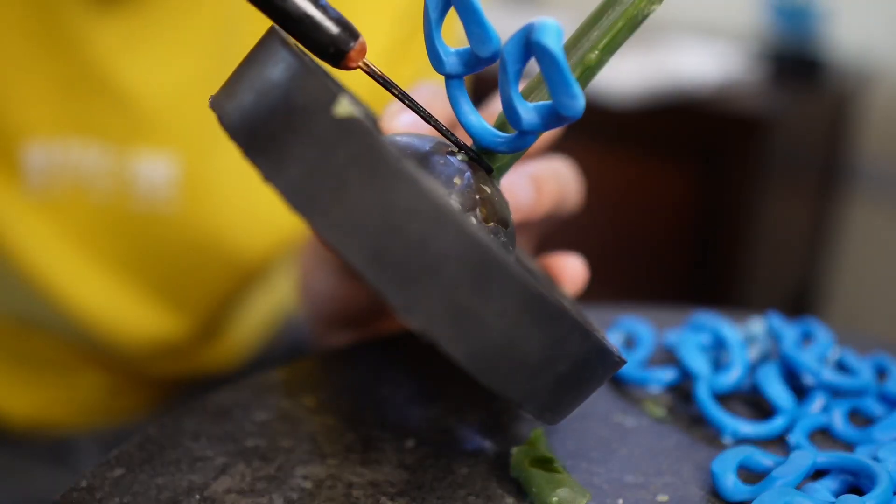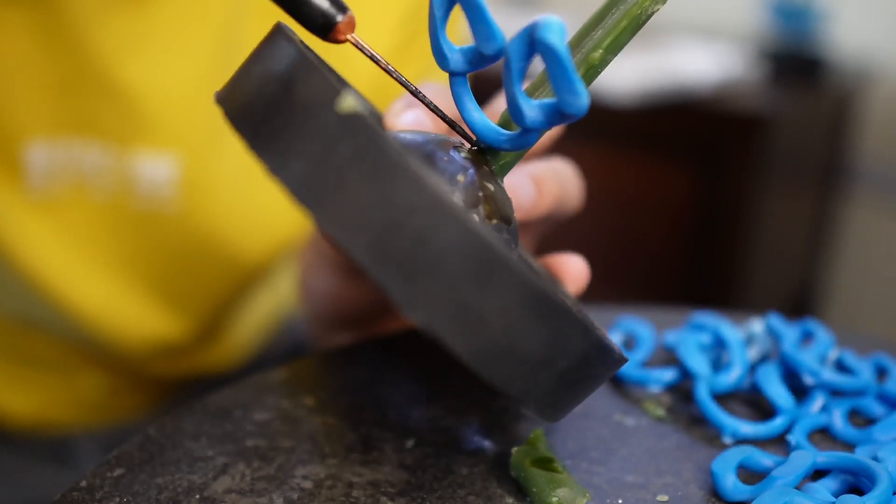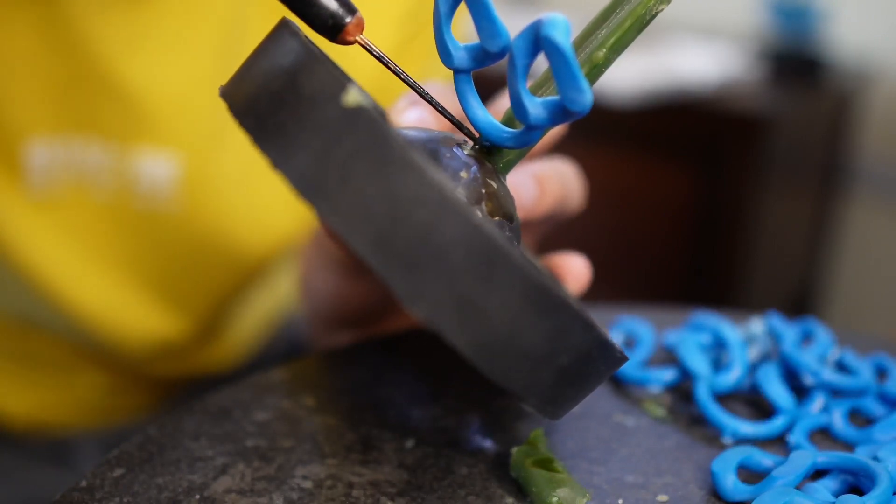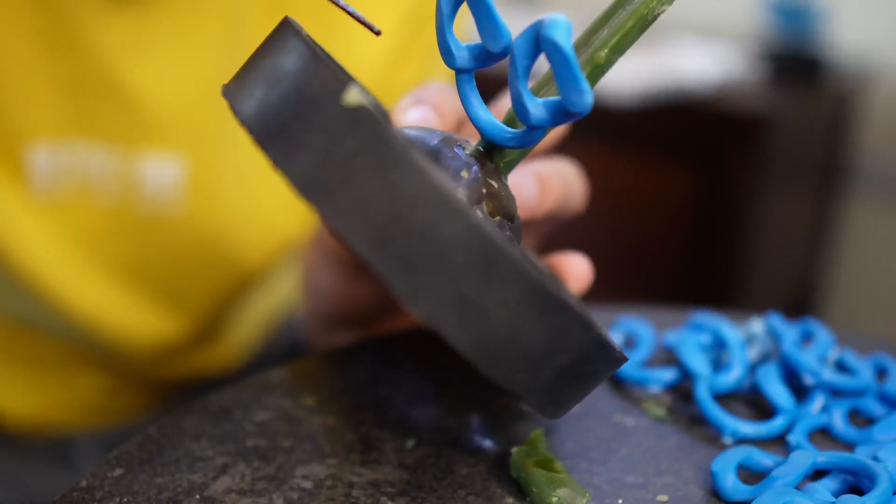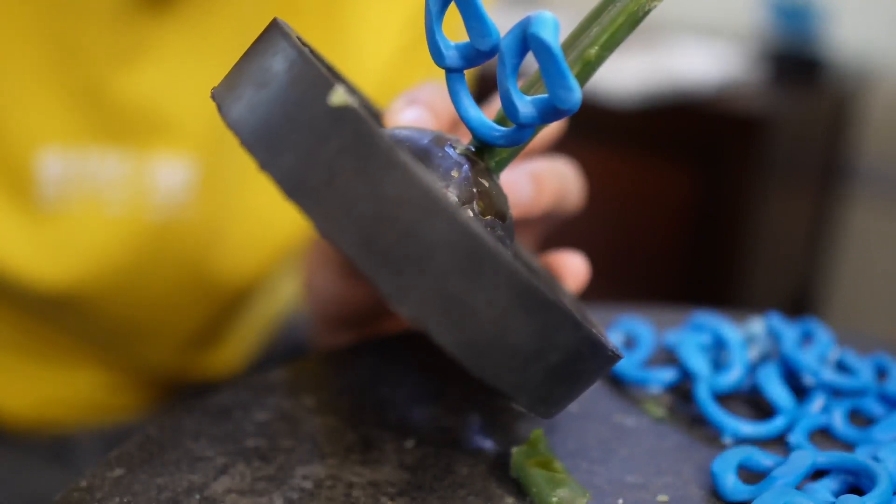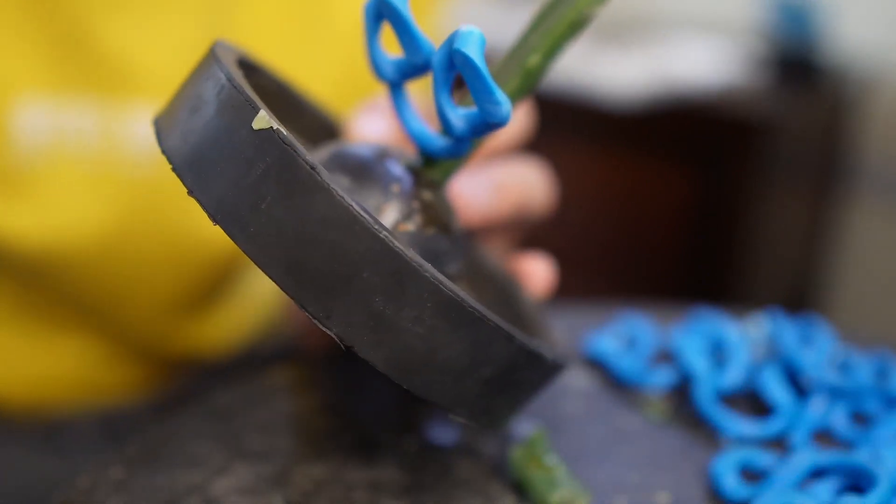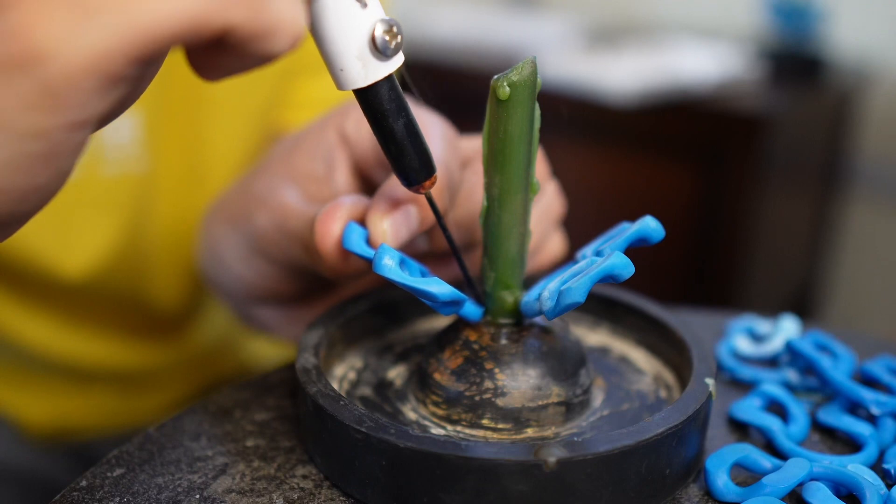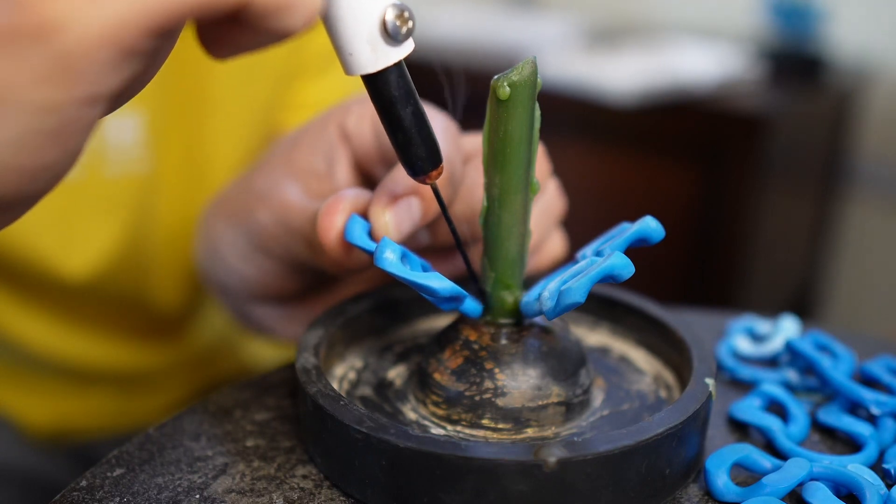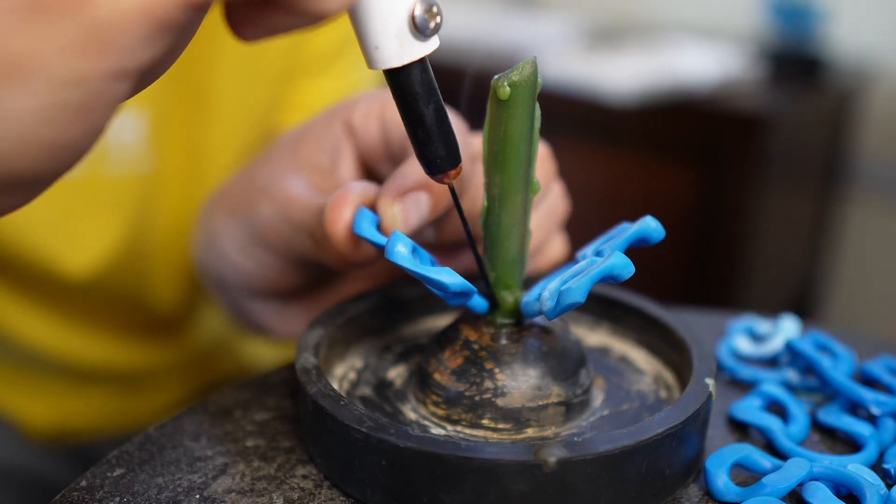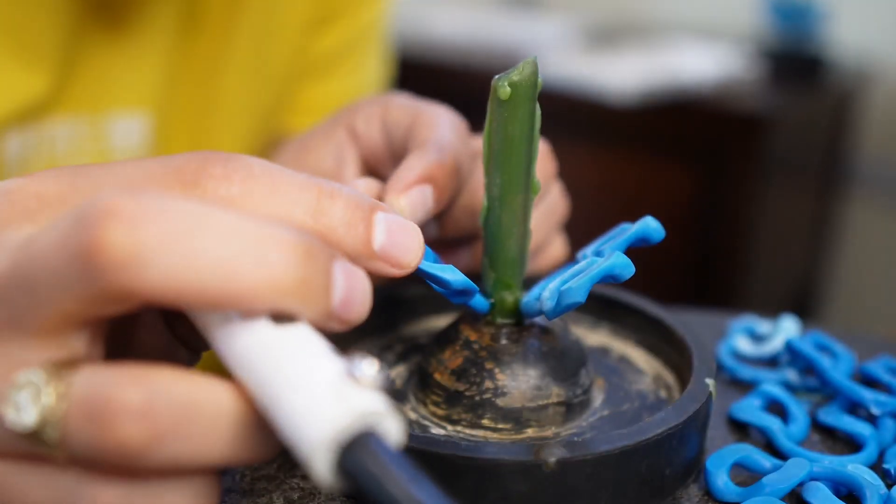Also make sure when you're attaching your items to your wax stem that you fully get all around it, because if you don't it's easy for it to fall off when pouring in the investment and also it's easy for the investment to go through your cast and just basically ruin it.